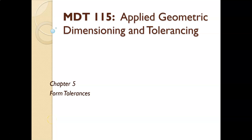Chapter five is our first chapter where we're truly getting into the geometric dimensioning and tolerancing aspect of engineering drawing. Prior to this, chapters one through four were really focusing on dimensioning review, setting the stage for GD&T, but also reminding you of the different requirements, applications, guidelines, and rules for dimensioning — which are very critical for moving forward into geometric dimensioning and tolerancing.